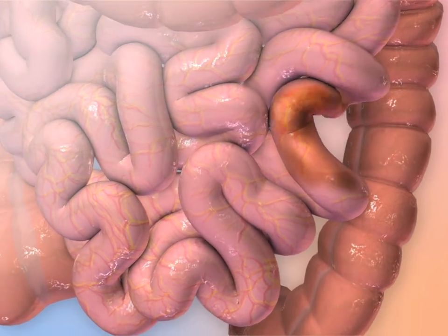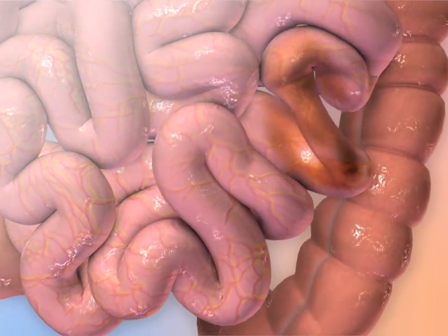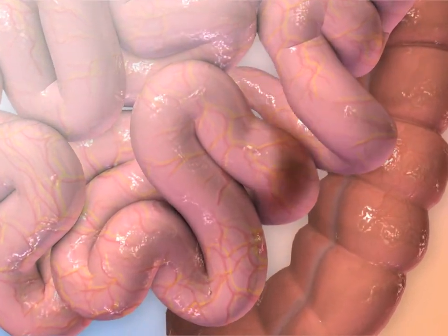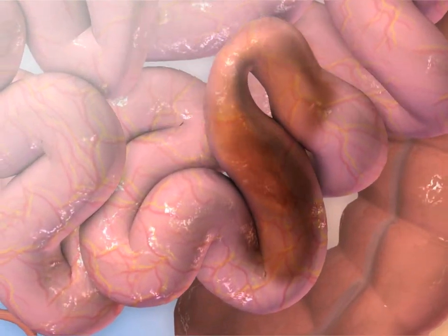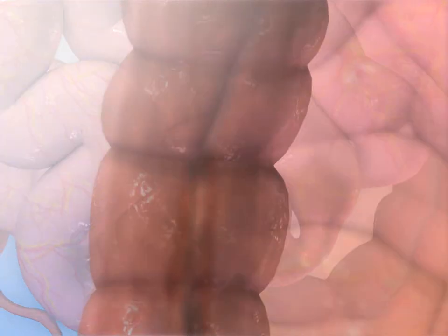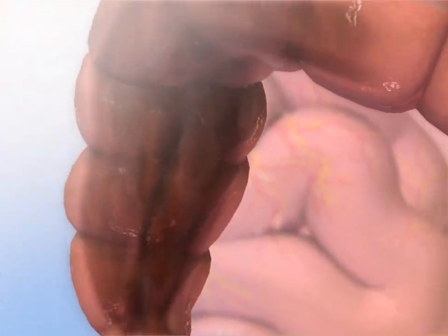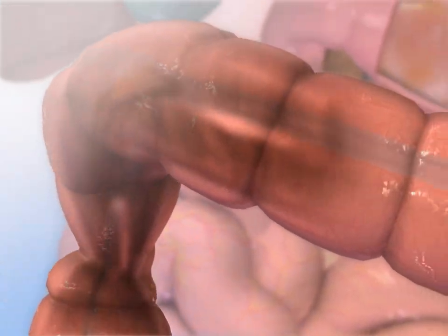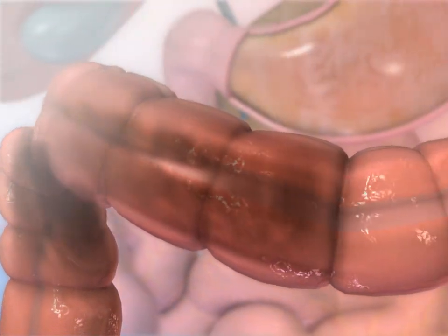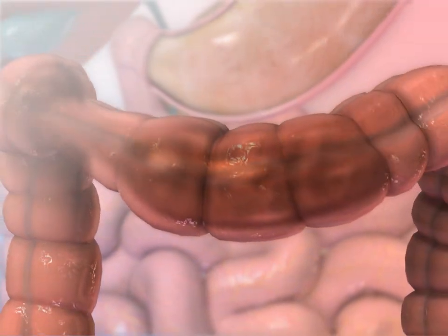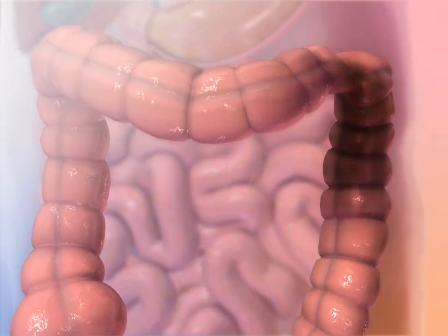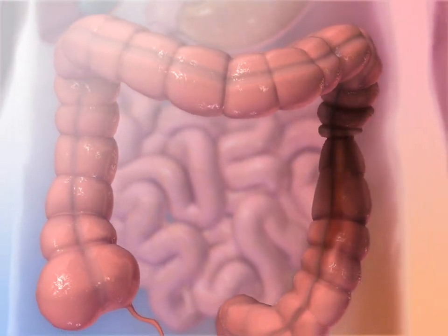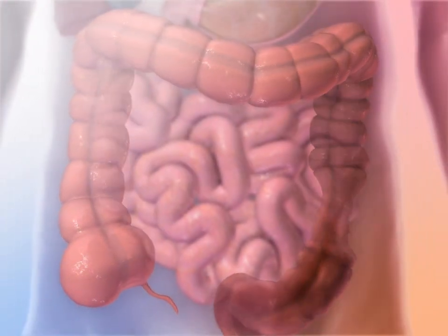In the intestines, the waves are smaller and more regular. As one section of the intestine contracts, the section in front relaxes. This occurs in the rhythmic, wave-like patterns that create the peristalsis that propels substances forward.